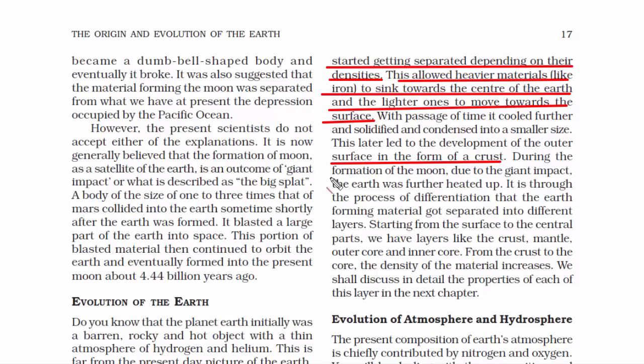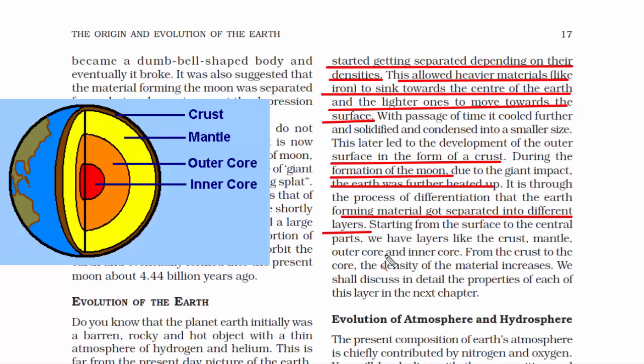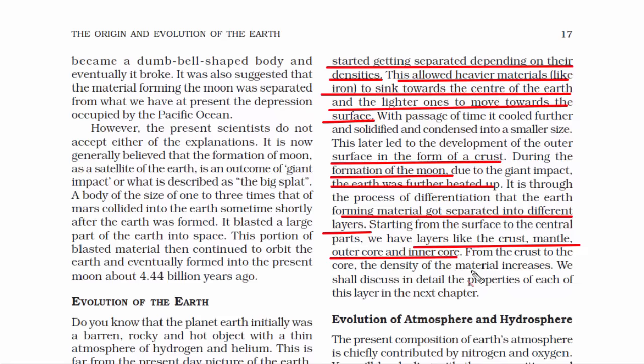Then there was another big impact — the creation of the Moon, also called the giant impact — which further heated the Earth and caused materials to get separated into different layers. Earth has four layers: the crust, mantle, outer core and inner core. Always remember, from the crust to the core, the density of the material increases.